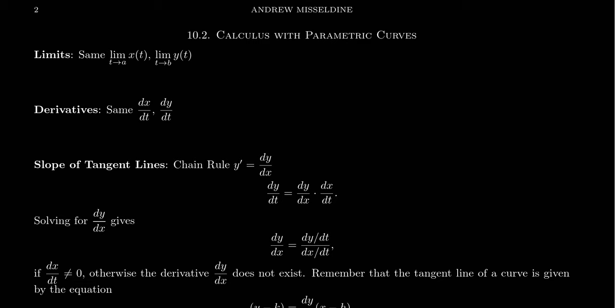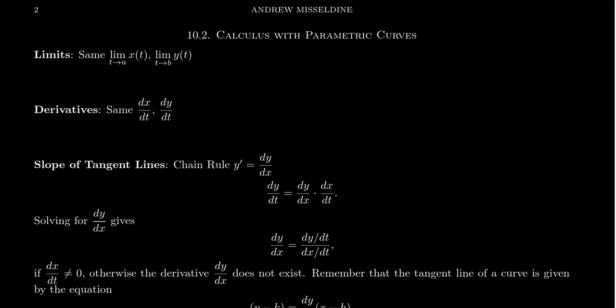Welcome back, everyone. We're going to continue our discussion — we started here in lecture 30 — but we're going to move from section 10.1 to section 10.2 about calculus with parametric curves, based upon examples we saw in James Stewart's calculus textbook. Now that we have a good idea of these parametric curves, we want to start considering doing calculus with them.